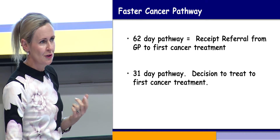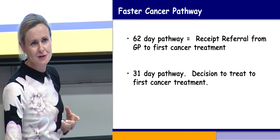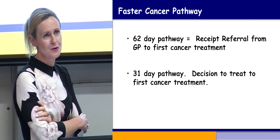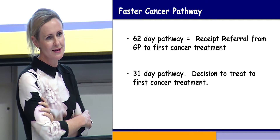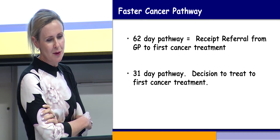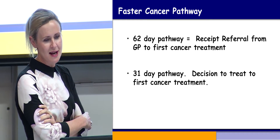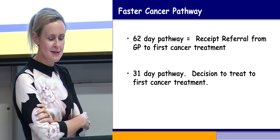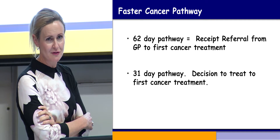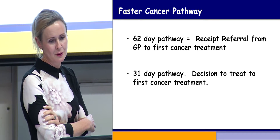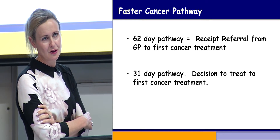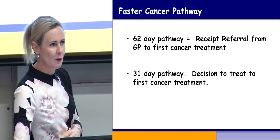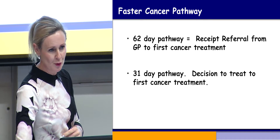I now want to talk about faster cancer time and triaging, because the Ministry of Health has set up guidelines and parameters to assess patients with a high suspicion of cancer within a certain time frame. There's a 62-day pathway — 62 days from receipt of referral from the GP to the first cancer treatment — with the Ministry guideline that we fulfil this criteria with 85% of patients. And a 31-day pathway from decision to treat, meaning from positive histological diagnosis to first cancer treatment. We are measuring these parameters and we are all failing miserably.